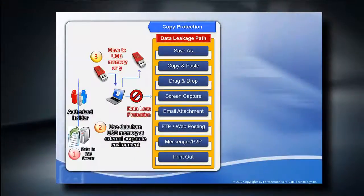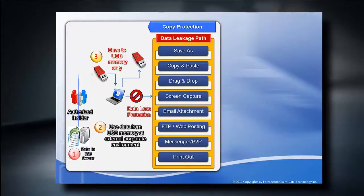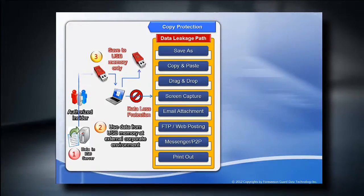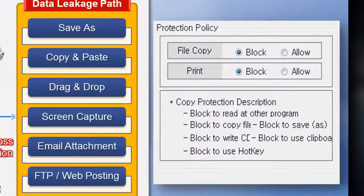One important feature that is unique to iGuard Data USB is that all the data stored on the key will automatically be copy protected. This means that once the data is in the iGuard Data USB, you will not be able to copy, paste, drag and drop, email, print, screen capture, or send to FTP or cloud storage unless you have authorization from your system administrator.